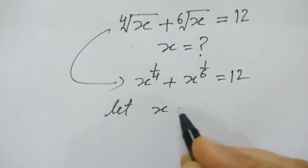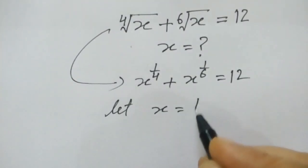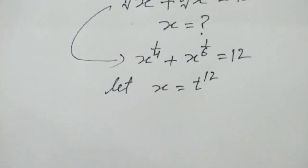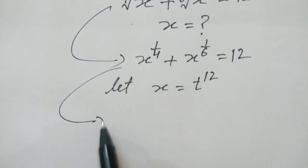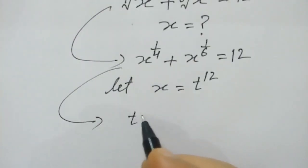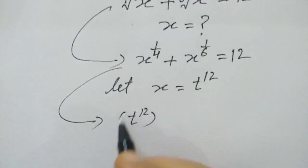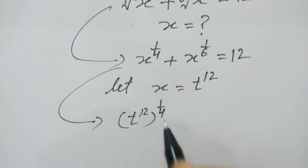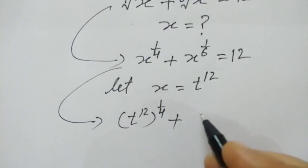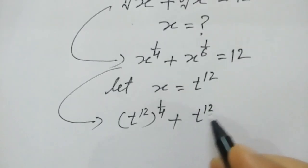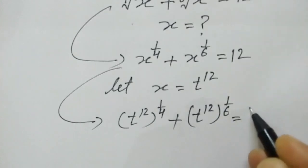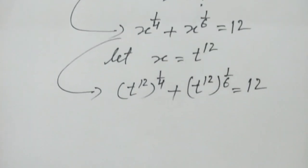Let x be equal to t to the power 12. So this equation will change as t to the power 12 to the power 1/4, plus t to the power 12 to the power 1/6, is equal to 12.